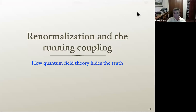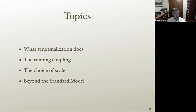We continue from where we left off. I want to talk about renormalization and the QCD running coupling, which is big at large distances and small at small distances — that's pretty amazing. In one sense the topic is how quantum field theory hides the true nature of what's going on. I'll discuss what renormalization does, the running coupling of QCD, the choice of scale, physics beyond the Standard Model, and later deep inelastic scattering.